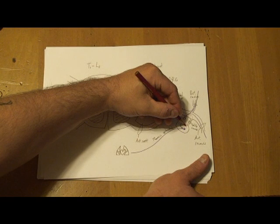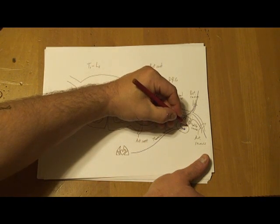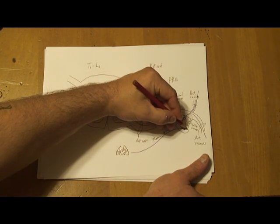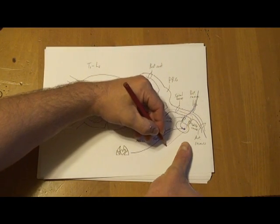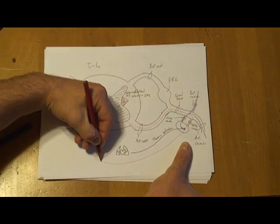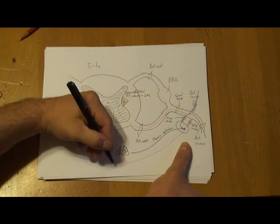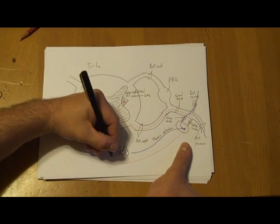As these axons that are going to the abdomen and pelvis enter, they go into the ganglion and they pass through it without synapsing. So these are, for example.